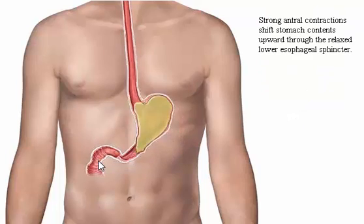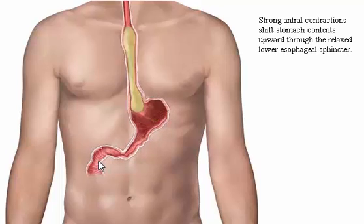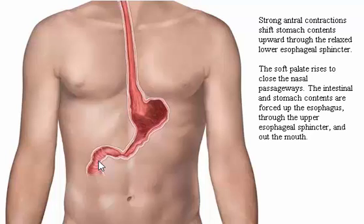Strong antral contractions shift stomach contents upward through the relaxed lower esophageal sphincter. The soft palate rises to close the nasal passageways. The intestinal and stomach contents are forced up the esophagus, through the upper esophageal sphincter, and out the mouth.